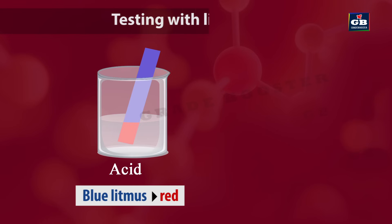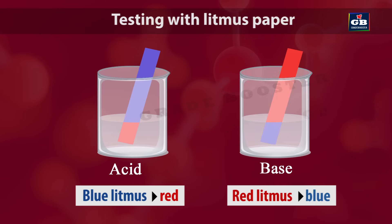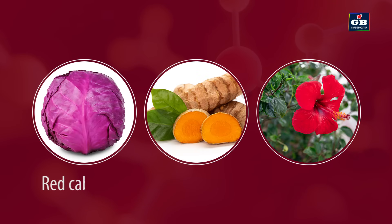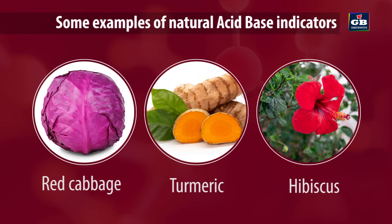Blue litmus paper turns to red when dipped in acid. Red litmus paper turns to blue when dipped in a base. Red cabbage, turmeric and hibiscus are some examples of natural indicators.